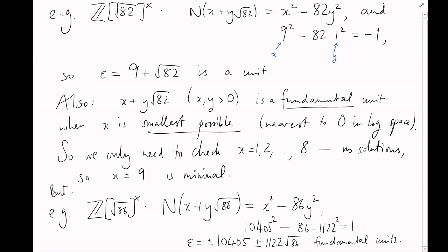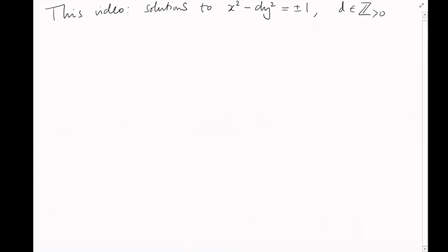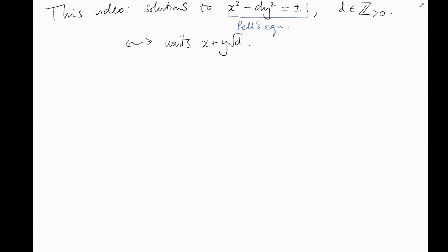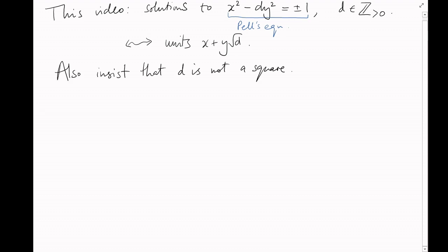In this video, we're going to discuss solutions to the family of equations x² − dy² = ±1, where d is a positive integer. That's another way of saying we're going to find elements x + y√d in ℤ[√d] that are units. For googling purposes, this equation and related equations are often called Pell's equation, even though Pell wasn't the first to do serious work on them. For obvious reasons, I'm going to insist that d isn't a perfect square, that is, that √d isn't in ℤ already.